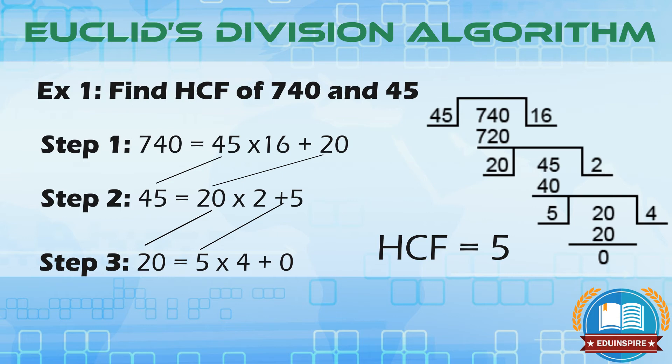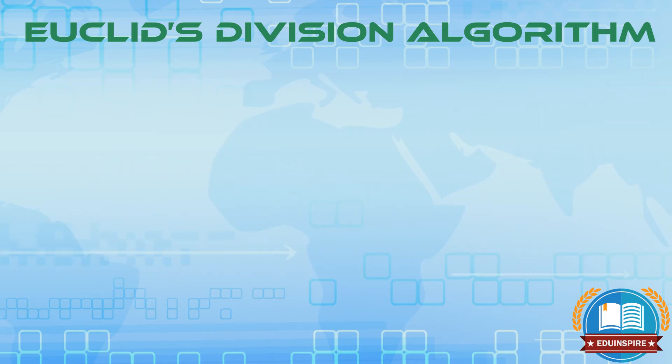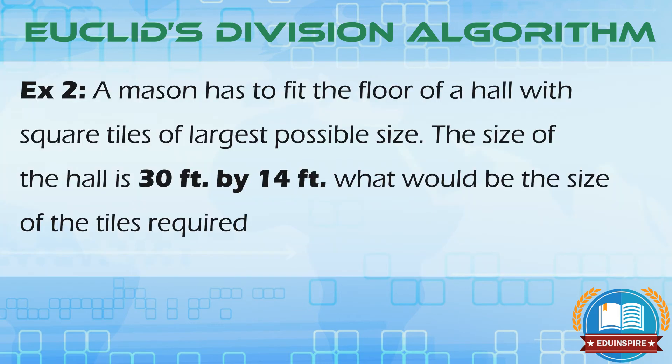The same algorithm can be applied to any two positive integers. Let's take one more example to understand this. This example will help us understand how this algorithm can be used in real life situations. Example 2: A mason has to fit the floor of a hall with square tiles of the largest possible size. The size of the hall is 30 feet by 14 feet. What would be the size of the tiles required?